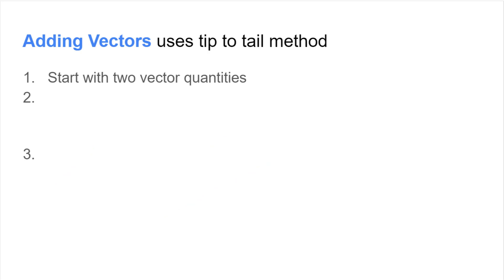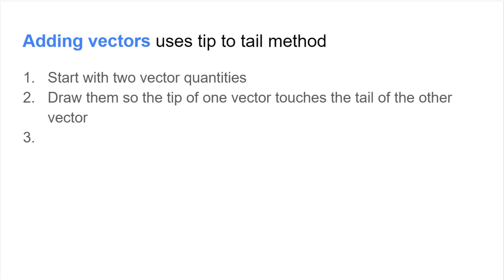The last feature of vector arrows is the ability to use mathematics to calculate unknown values. To take advantage of this feature fully requires some knowledge of geometry and trigonometry, but for right now we will introduce the basics of adding and subtracting vectors as a model. To add vectors we use a method called tip to tail. To use this method you take two vector quantities and draw them so the tip of one vector touches the tail of the other vector. The goal is still to represent the angle, length, and direction of the two combined vectors.